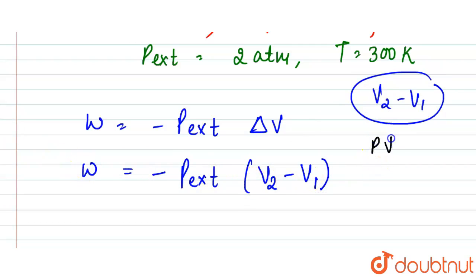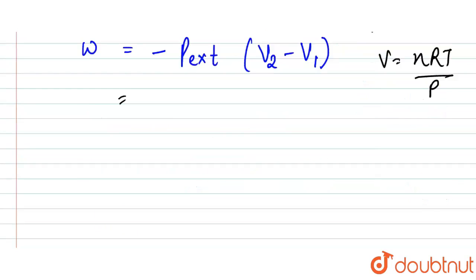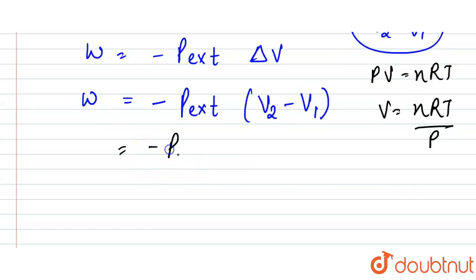Now we are given in terms of pressure, so we know PV equals nRT, so volume equals nRT upon P. We can write it in terms of pressure, because here nRT value is same. It will be minus p external times nRT upon p2 minus nRT upon p1.